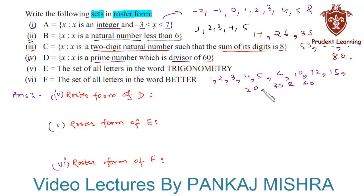Now let's find prime numbers among them. Here 2, 3, and 5 are prime numbers, so the elements of set D are 2, 3, and 5. We'll write set D in roster form as D = {2, 3, 5}.